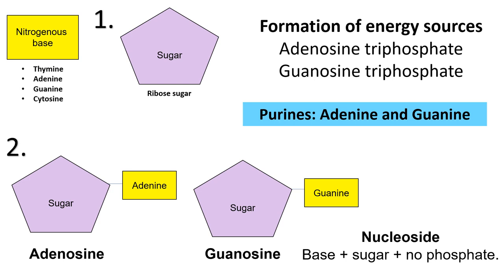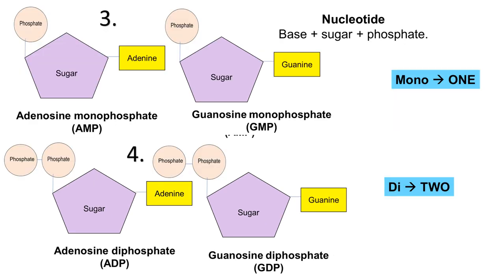When you add a phosphate group, you form a nucleotide — so a base plus sugar plus phosphate group forms a nucleotide. An example is DNA, which is a genetic material consisting of two strands made up of many complementary-bound nucleotides. Because there is only one phosphate, you call it guanosine monophosphate or adenosine monophosphate.